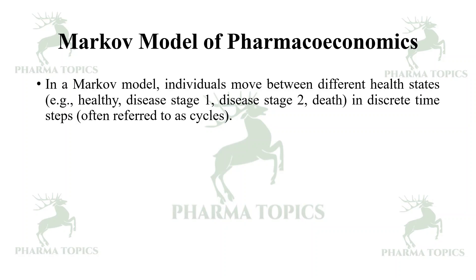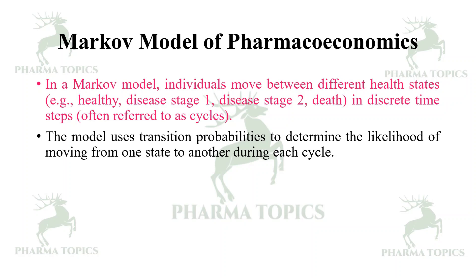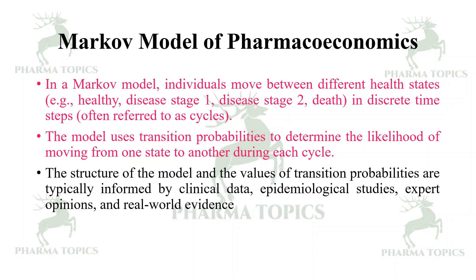In a Markov model, individuals move between different health states — healthy, Stage 1, Stage 2, and so on — and can progress to death, in discrete time steps often referred to as cycles. The model uses transition probabilities to determine the likelihood of moving from one state to another during each cycle. The structure of the model and the values of transition probabilities are typically informed by clinical data, epidemiological studies, expert opinions, and real-world evidence.